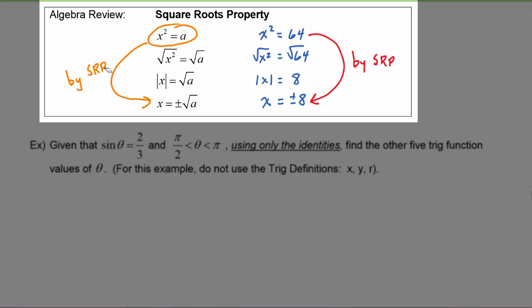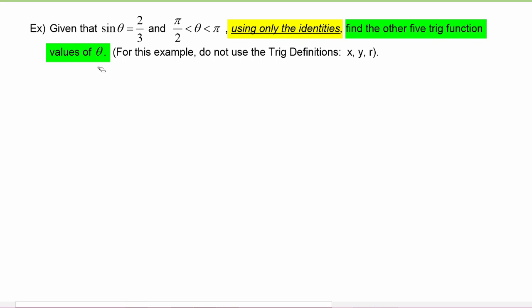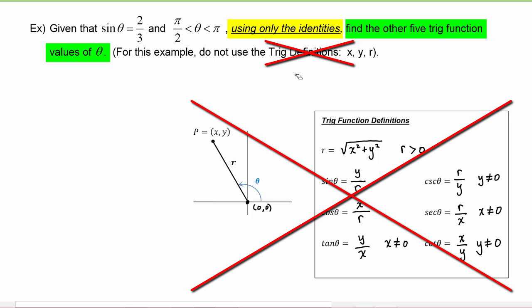Let's see how this comes into play in trigonometry. In this example, we're given that sine of theta is two-thirds and that theta is between pi over two and pi. The instructions say: using only the identities, find the other five trig function values of theta. So you're explicitly directed not to use the trig definitions — no drawing a picture, no finding x, y, and r.